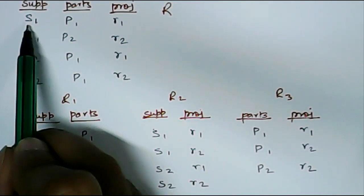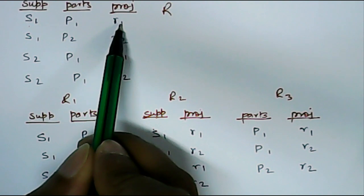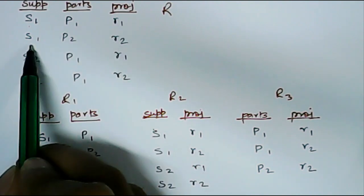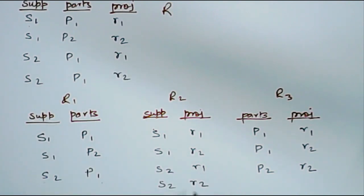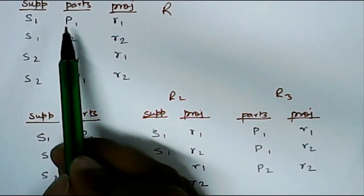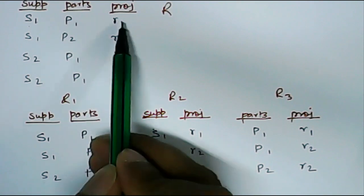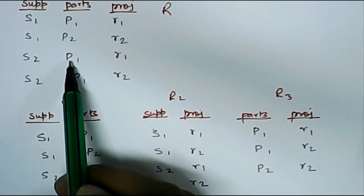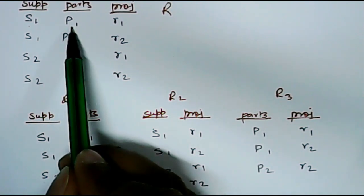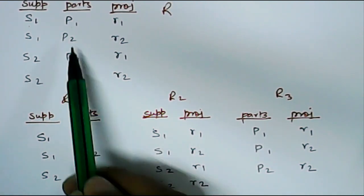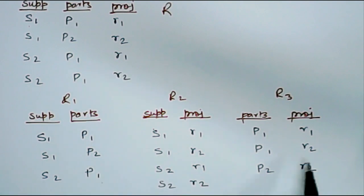Now similarly we will fill this table. S1 supplies parts to R1, S1 also supplies parts to R2, S2 supplies to R1, S2 supplies to R2. In R3 we are storing parts and projects. Part P1 is supplied to R1. P1 and P2 both are supplied to R2. So we write P1 R1, P1 R2, P2 R2.